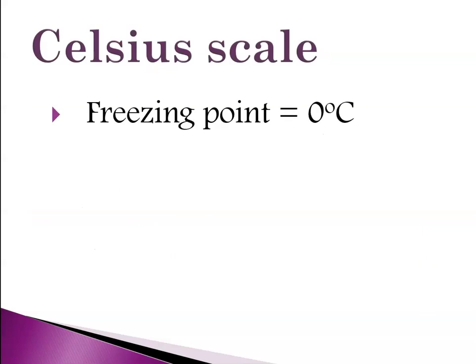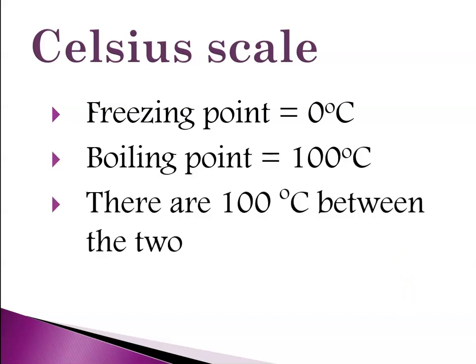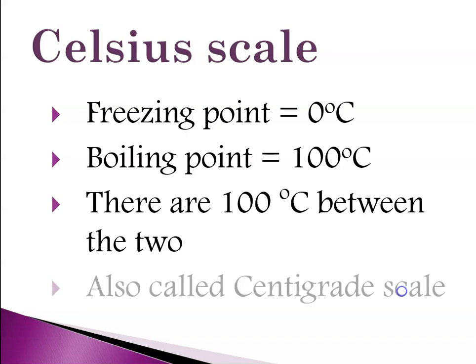So going back to degrees C, we said the freezing point of water is set at zero C, the boiling point is 100, and so there's 100 degrees between the two. So sometimes you'll hear it referred to as the centigrade scale, meaning that there are a hundred gradations between the freezing point and the boiling point of water.